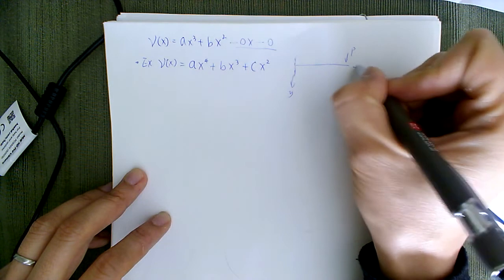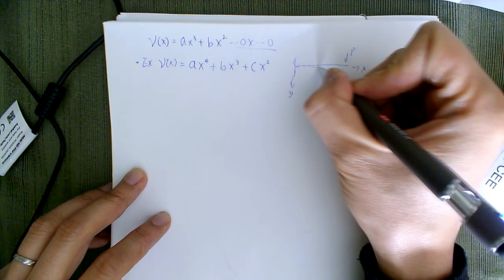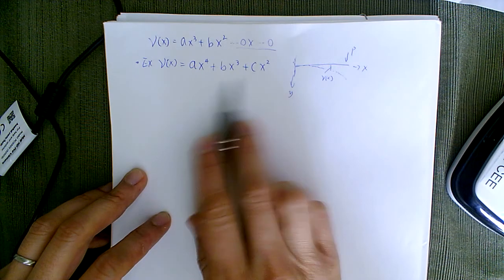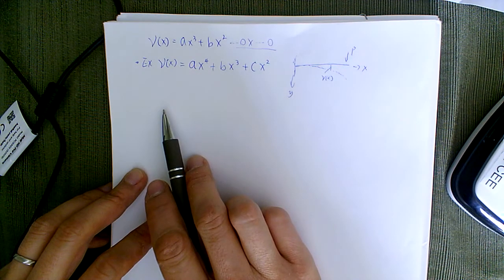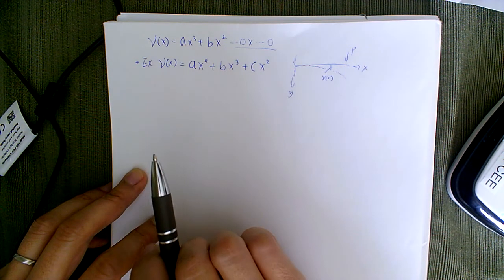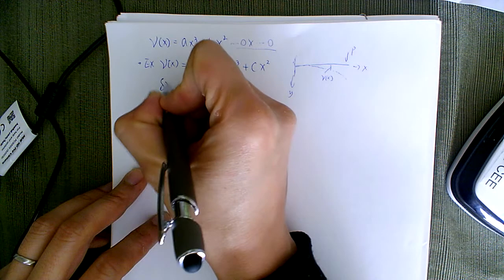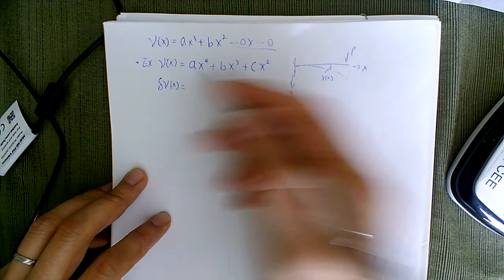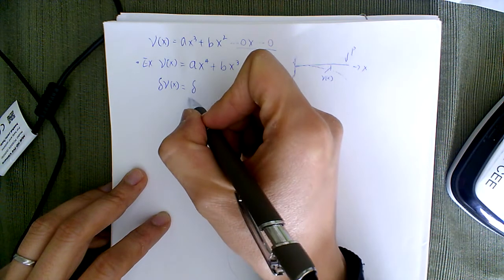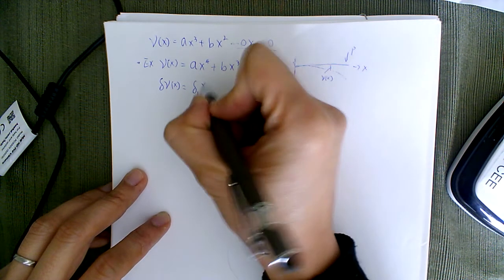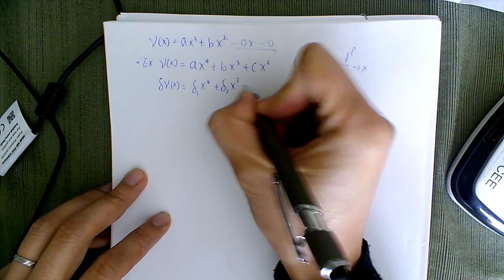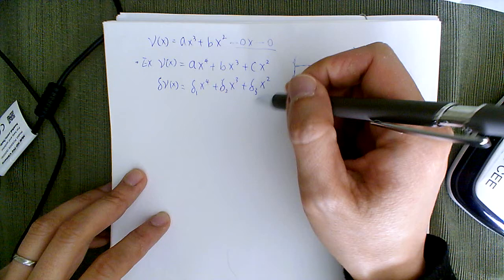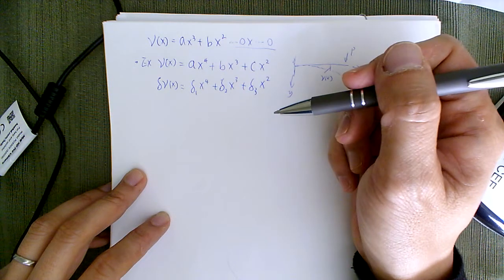After applying load P, with positive y, x starting at zero, the real displacement v(x) is assumed as a combination of three terms: fourth order, third order, and second order. For the virtual displacement, you use the same format: δ₁·x⁴ + δ₂·x³ + δ₃·x². The δ₁, δ₂, δ₃ are arbitrary numbers, while a, b, c are the unknowns of the real displacement we're solving for.